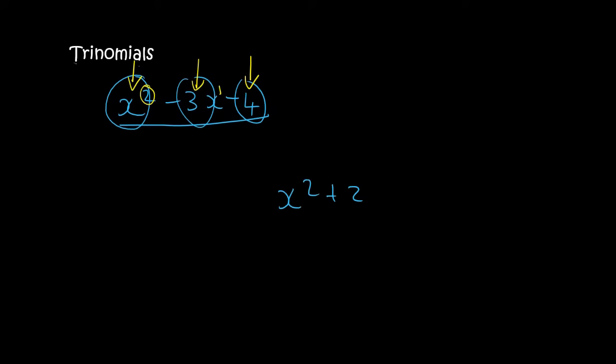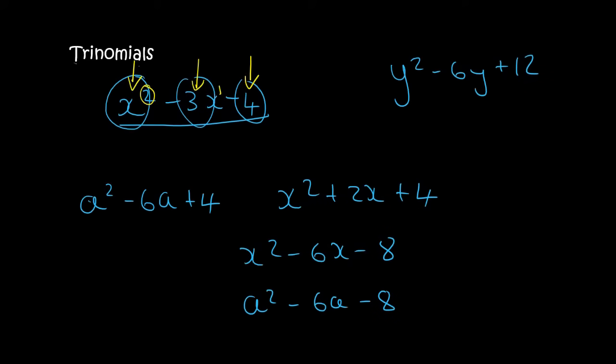So a few other examples would be something like this. Notice, I don't only have to use x, I could use a, I could even use y. See, so it has to have something to the power of 2, then a normal y, and then a number by itself. Those are called trinomials.